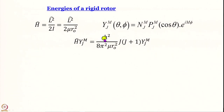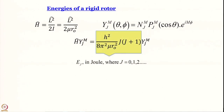Dividing by 2μr₀² gives us h²/(8π²μr₀²). So the energy eigenvalue is a constant multiplied by J(J+1) multiplied by the wave function — that is the Schrödinger equation — and this is the eigenvalue of energy in joules, where J equals 0, 1, 2, 3, and so forth.